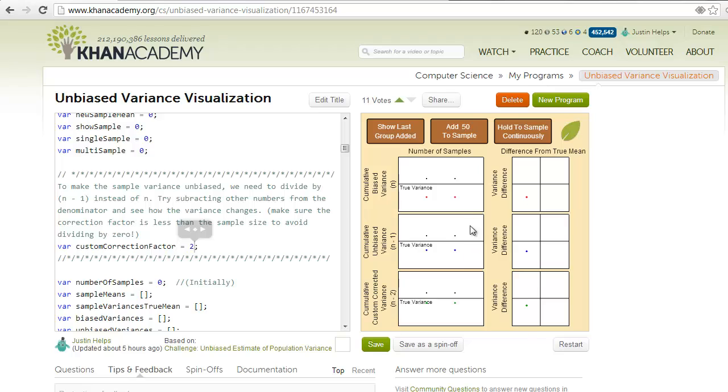If we add another sample group, it recalculates the variances for the whole sample, which now has 100 elements in it, and plots that as the next point.